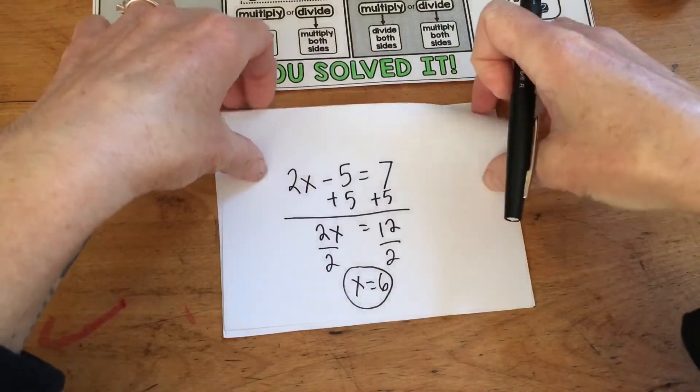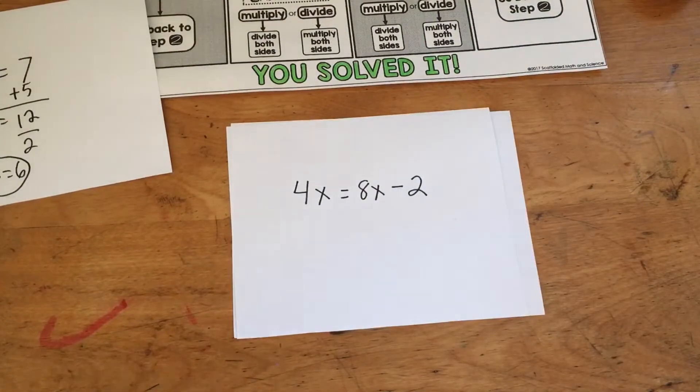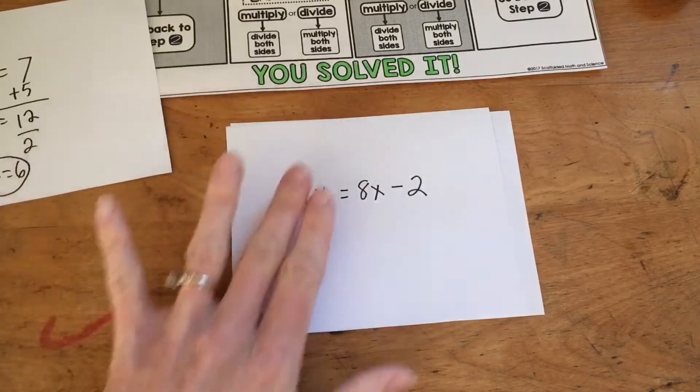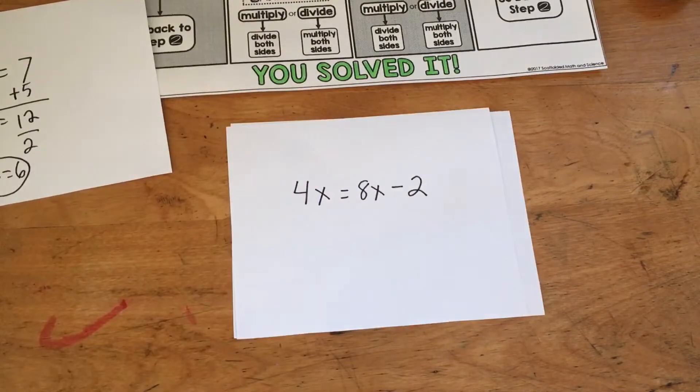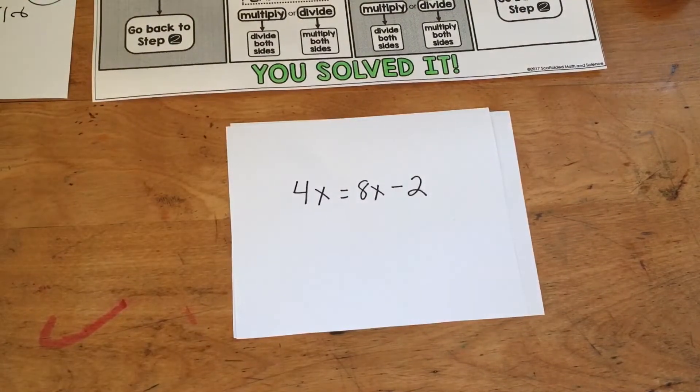This method also works for the trickier equations such as 4x equals 8x minus 2. A lot of kids seem to think that action has to happen on the left side, but in an equation like this, the right side of our equation has the two terms on it.